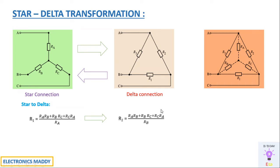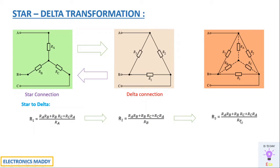For R2, the numerator term remains the same — (Ra·Rb + Rb·Rc + Rc·Ra) — and the denominator is the resistance opposite to R2, which is Rb. Similarly, R3 uses the same numerator divided by Rc, the resistance opposite to R3. So for star-to-delta, the opposite branch resistance is always used in the denominator.